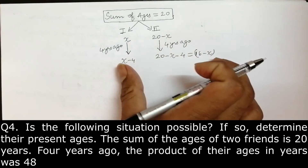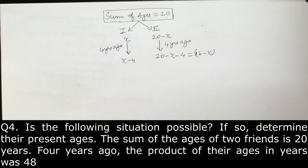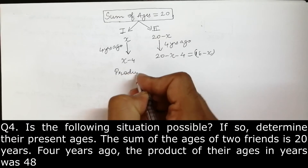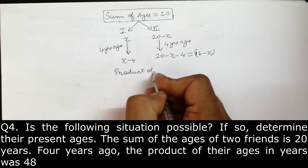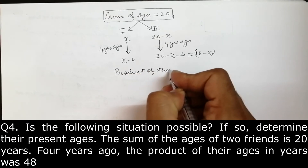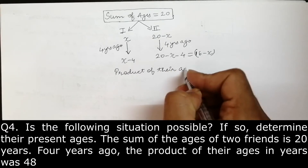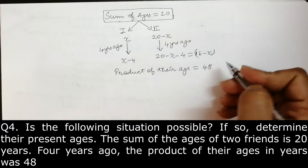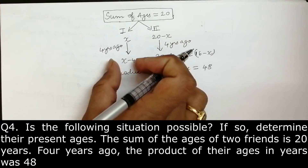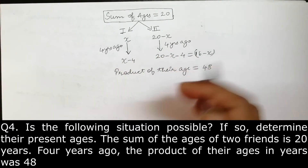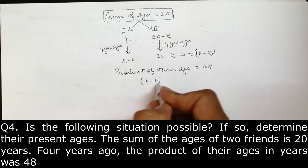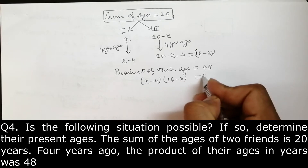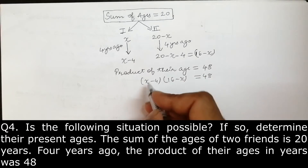तो अभी हमको 4 साल पहले का age मिल गया। अभी next condition क्या दिया है — the product of their ages is given to us as 48. और product किसका — 4 साल पहले की जो age है दोनों friends की, उनका product। तो x minus 4 multiplied by 16 minus x, which is equal to 48.